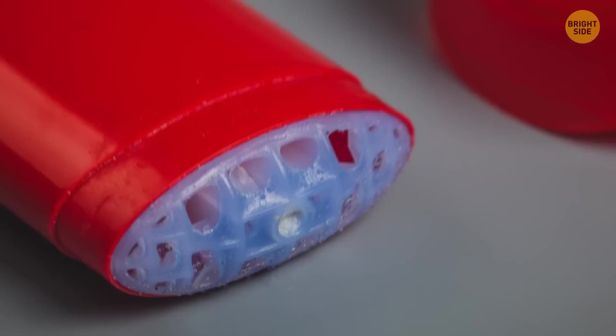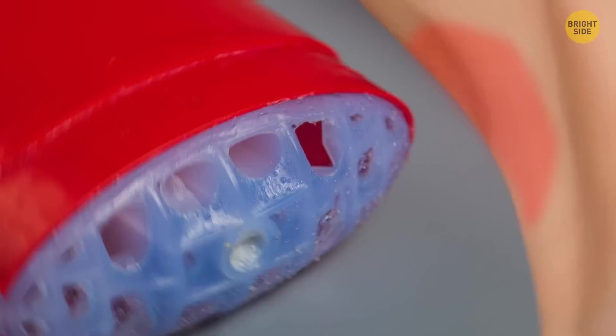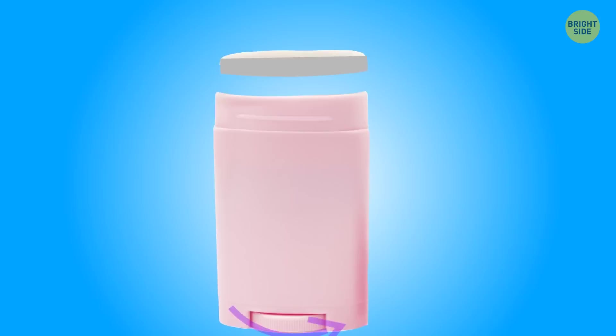Stick deodorants go to waste when the casing starts rubbing against your skin, but there's still plenty left in there. Here's an easy trick to get it out. Unscrew the bottom and push it up from underneath. That'll give you a few more days at least.